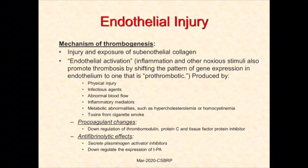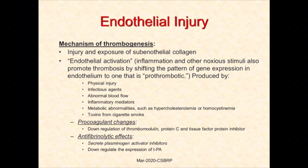Regarding the first component of the triad — endothelial injury — whenever there is endothelial injury, there is exposure of subendothelial collagen which invites binding with von Willebrand's factor and platelets, forming a plug called a thrombus. Endothelial injury also causes the endothelium to enter a state of endothelial activation, wherein genetic expression shifts towards pro-thrombotic protein synthesis. This includes pro-coagulant changes like down-regulation of thrombomodulin, protein C, and tissue factor pathway inhibitor, as well as anti-fibrinolytic effects such as secretion of plasminogen activator inhibitors and down-regulation of tissue plasminogen activators.